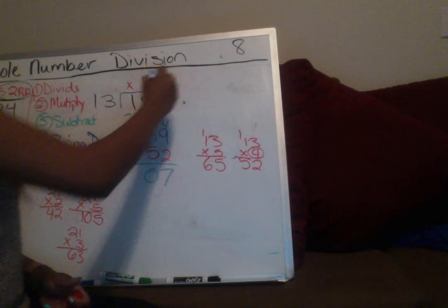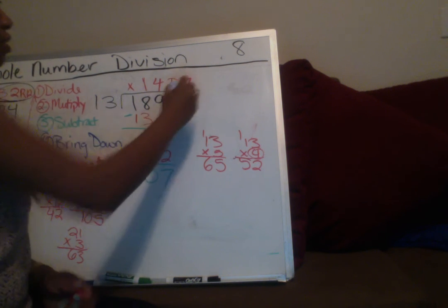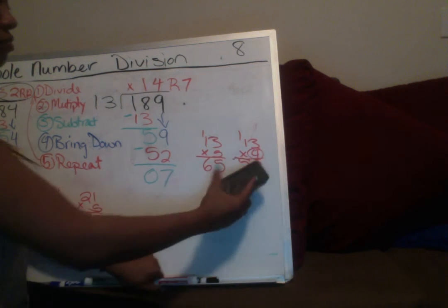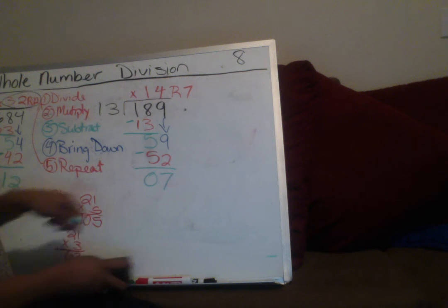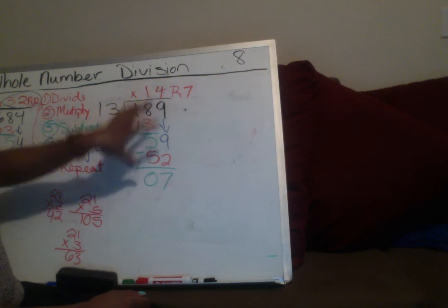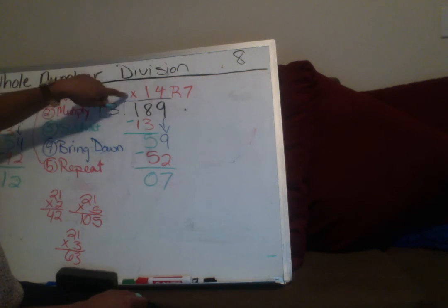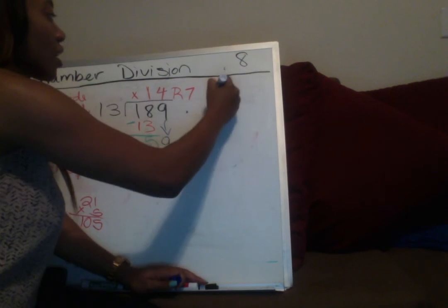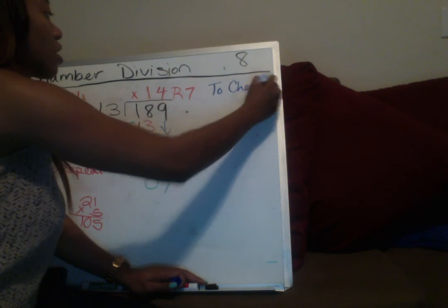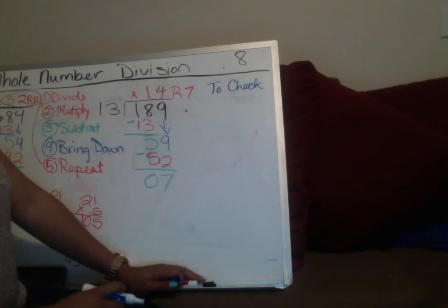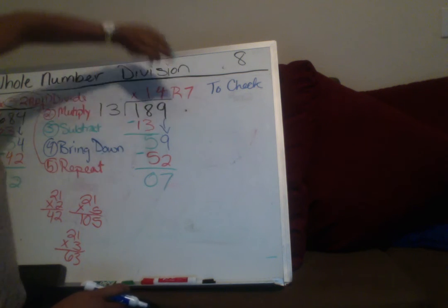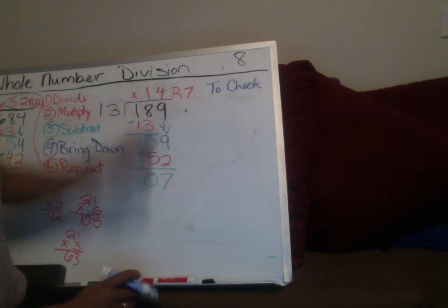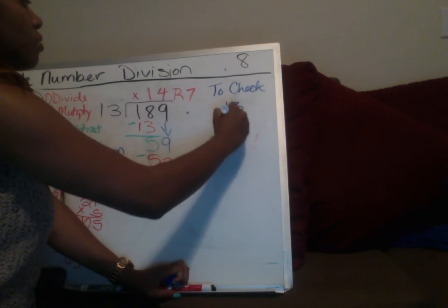Now to check yourself: erase and do the opposite operation. If this is division, we are now going to multiply. To check, take your answer — not the remainder yet, just the whole number — and multiply 13 times 14.